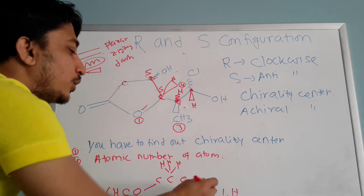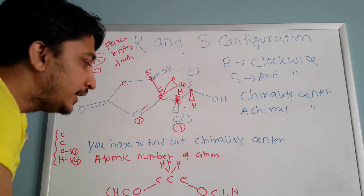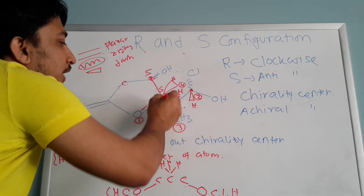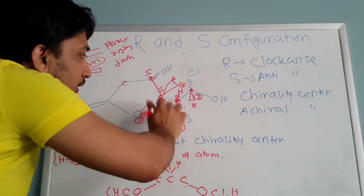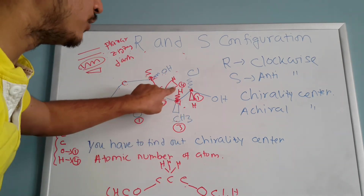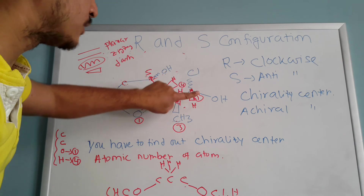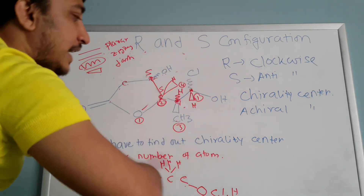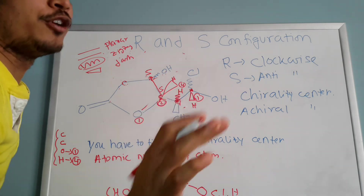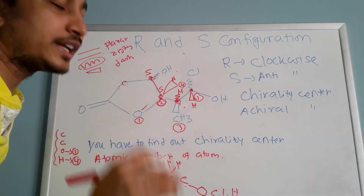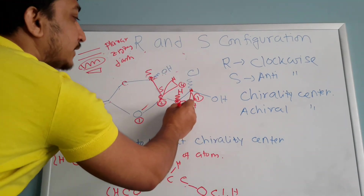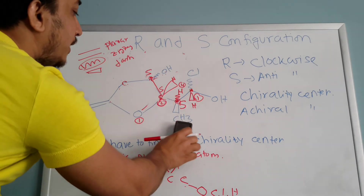We can differentiate carbon from chlorine — chlorine's atomic number is higher, so that side is number two and the other is number three. Number one is OH. We don't care about number four (lowest atomic number). The sequence is going anti-clockwise. The lowest atomic number is away from you, so we do not need to flip — this is S configuration, absolutely S configuration.